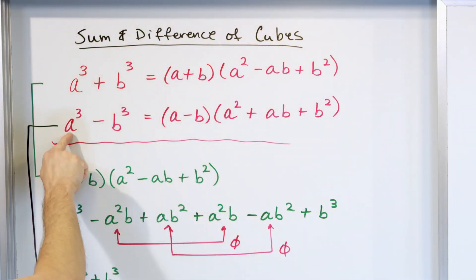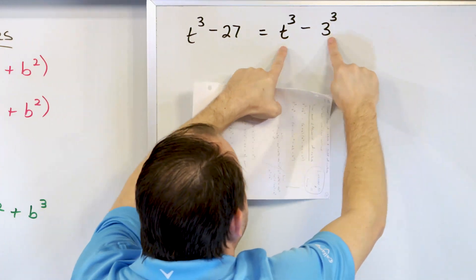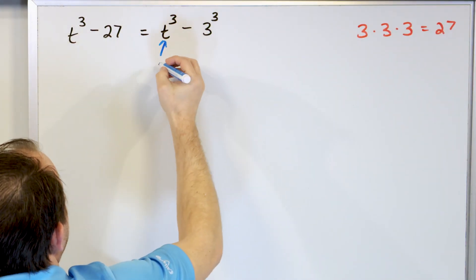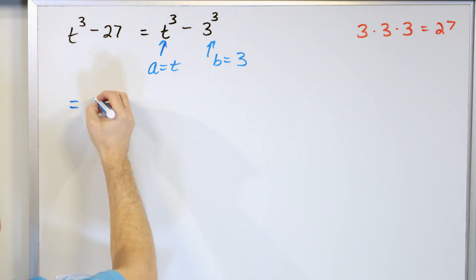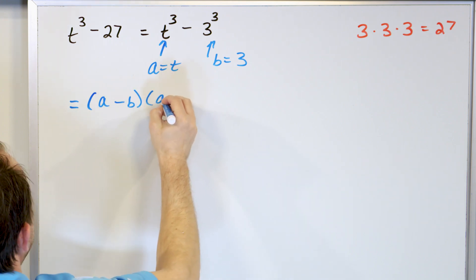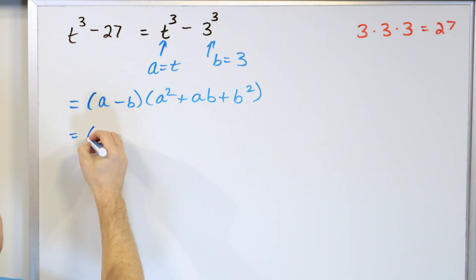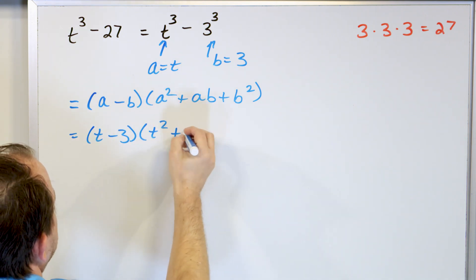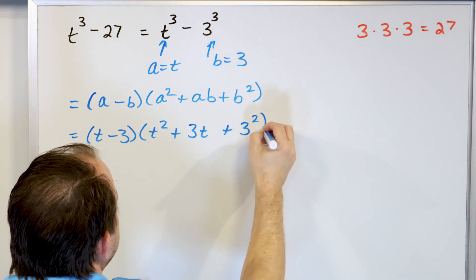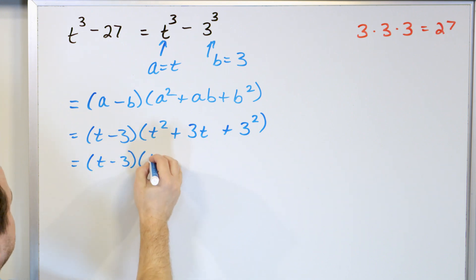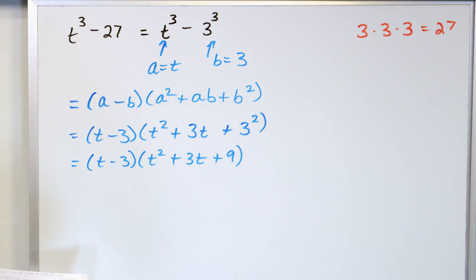We have a rule for the difference of two cubes: A minus B times A squared plus AB plus B squared. In this case, A is T and B is 3. So we write: T minus 3, times T squared plus T times 3 plus 3 squared, which simplifies to T minus 3, times T squared plus 3T plus 9. That's the final answer.